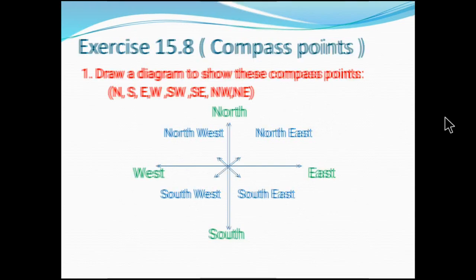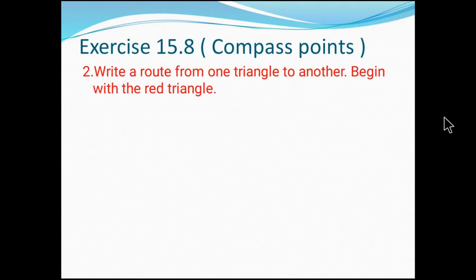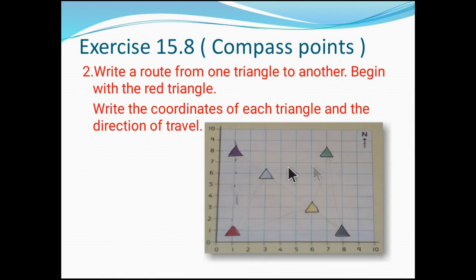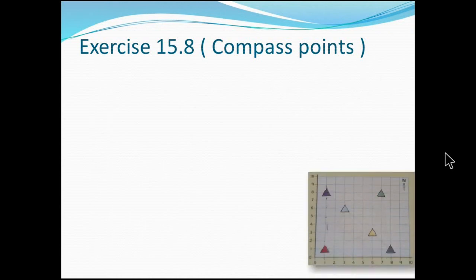Let's enter our next question. Question two: Write a route from one triangle to another beginning with the red triangle. Write the coordinates of each triangle and the directions of travel. Look at this: they have given a graph paper. They have drawn six triangles of different colors. We have to start the journey from this red triangle.